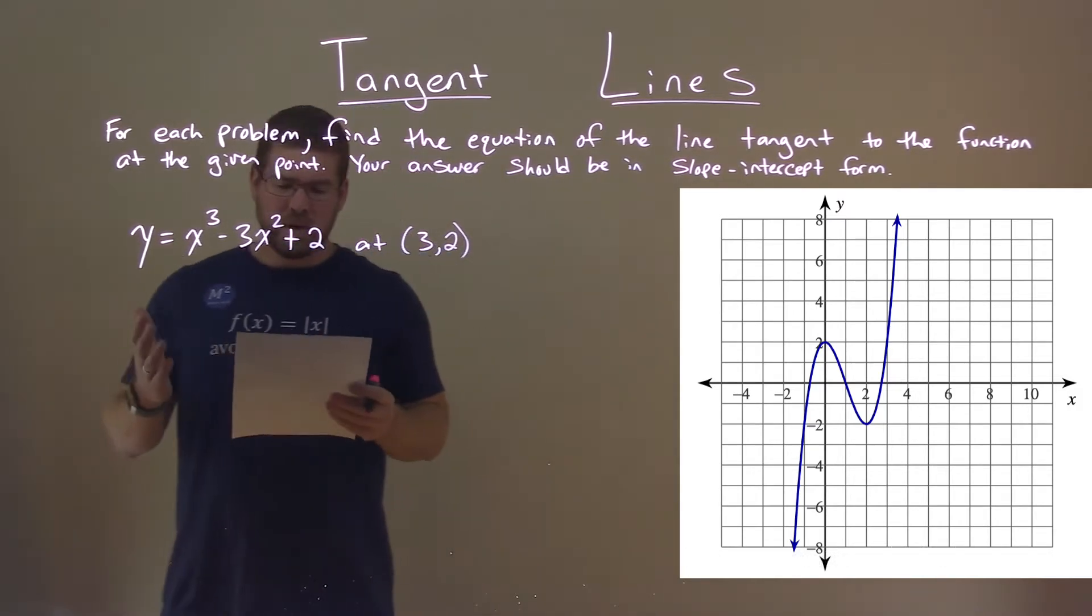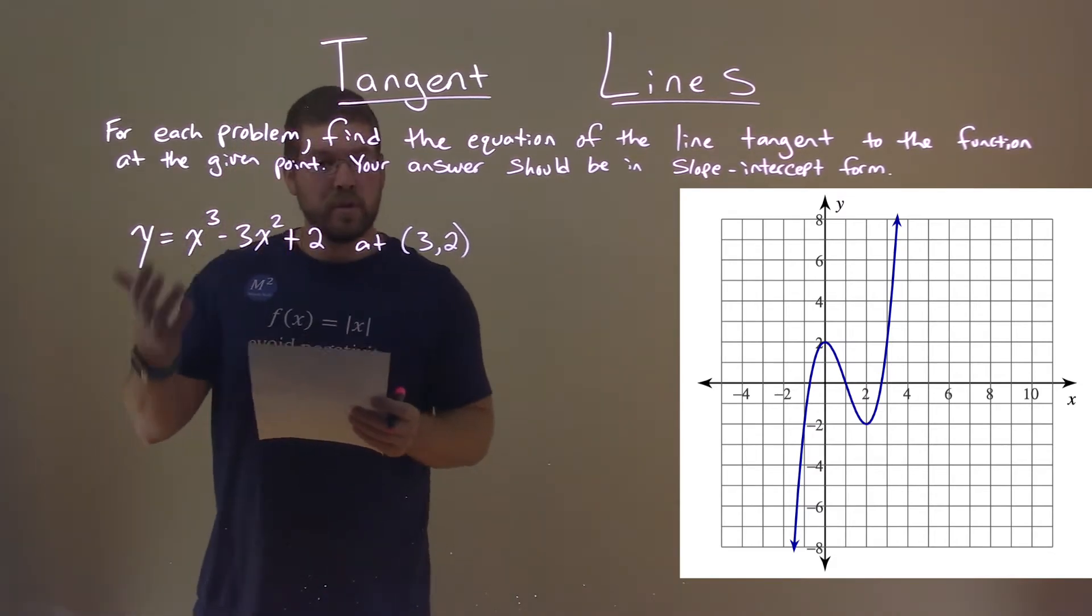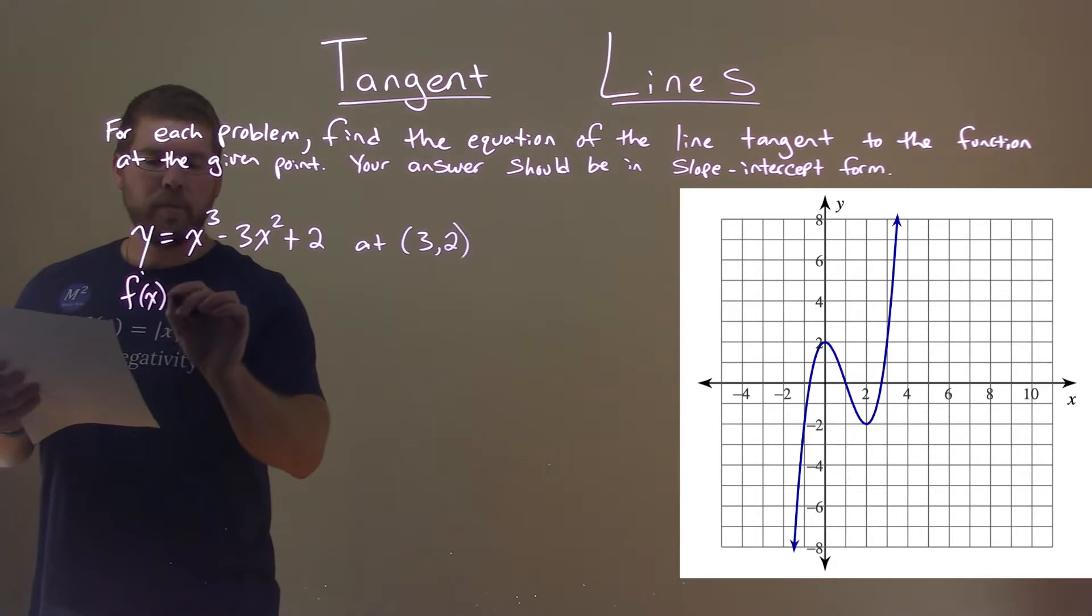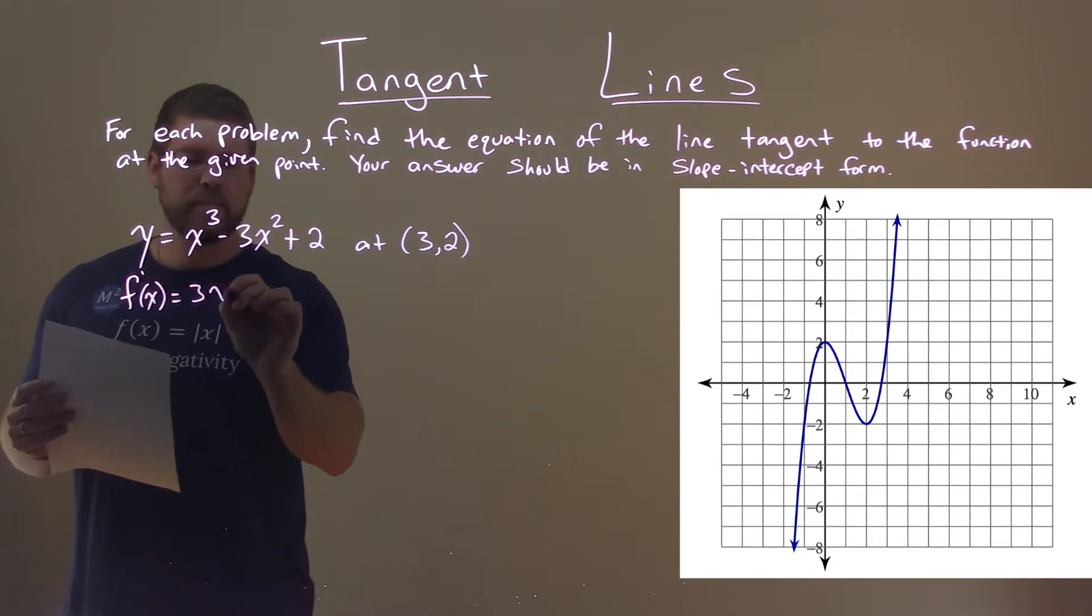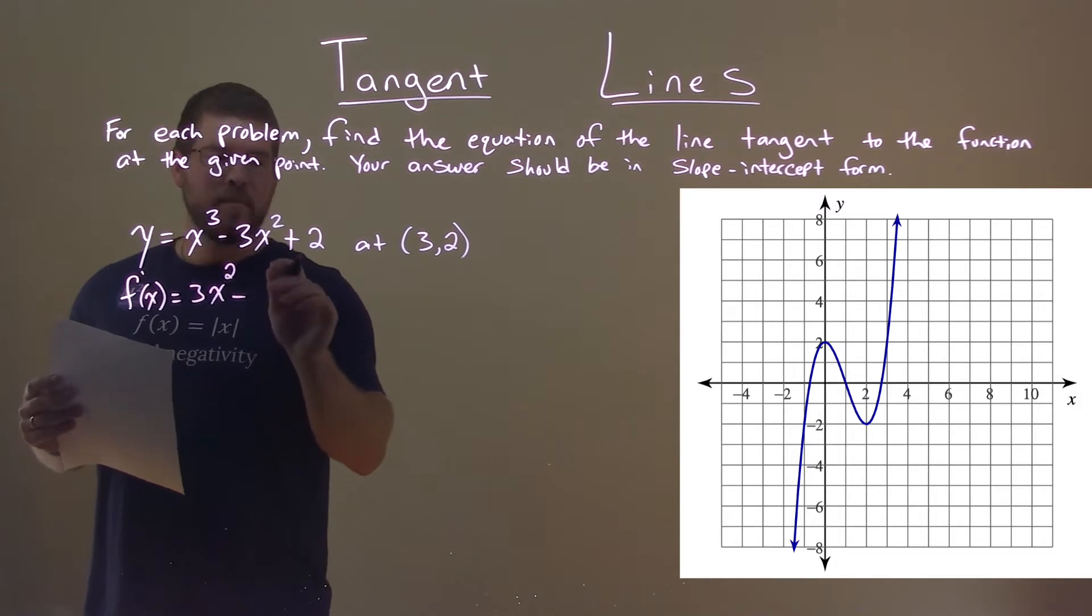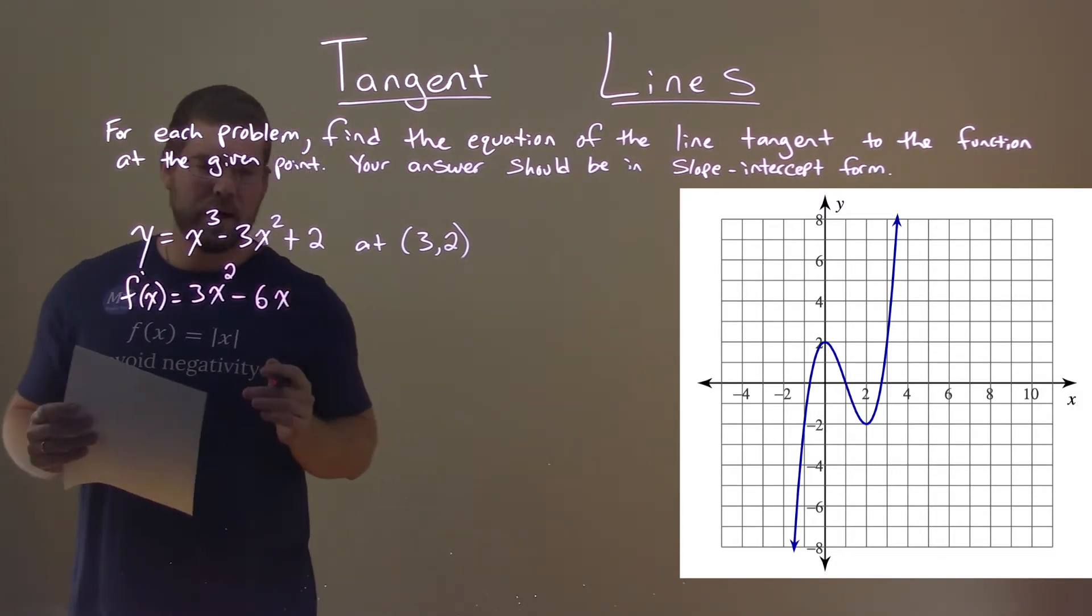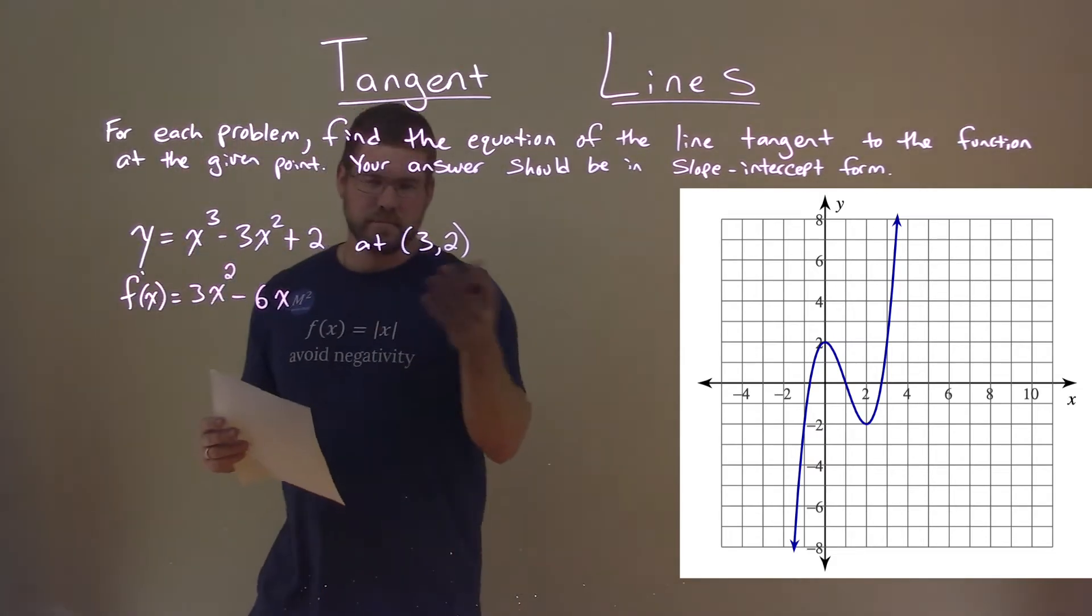First, we need to find our derivative. Let's call it f prime of x, and we're going to use the power rule. 3 comes down, x subtract the exponent by 1 to be 2. Minus 2 comes down, multiply it by 3, we got 6x to the first power, and then the constant derivative of 0.